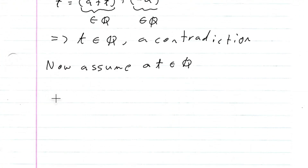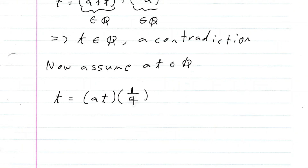We know that T is equal to A·T times one over A, because A divided by A is one and you're left with T. We can write one over A because A is not zero. And if A is rational and not zero, then one over A is rational and not zero.